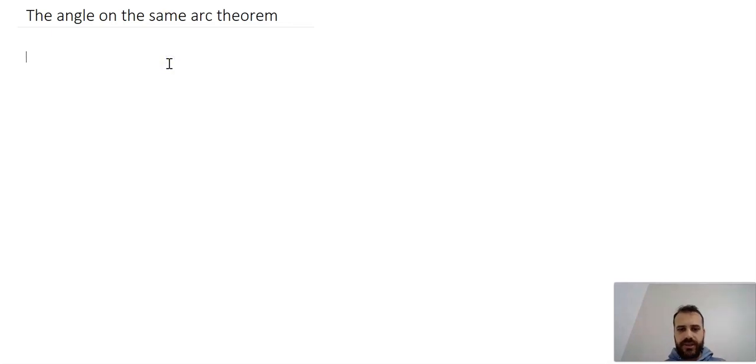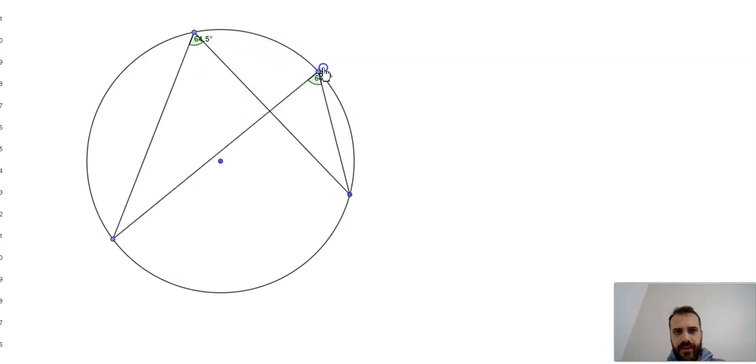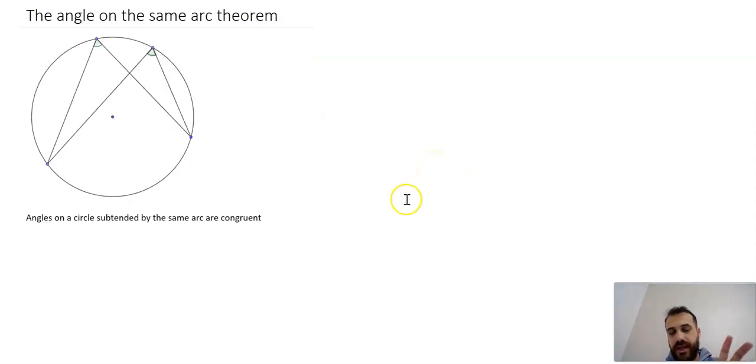What is the angle on the same arc? This theorem says that if you have a circle and an arc, and from that arc you draw one set of lines to the edge of the circle and another set of lines to the edge of the circle, then the two angles will be identical. It doesn't matter where I move them to, they're going to be the same. You can probably already imagine how we're going to prove this. In fancy language, it says angles on a circle subtended by the same arc are congruent.